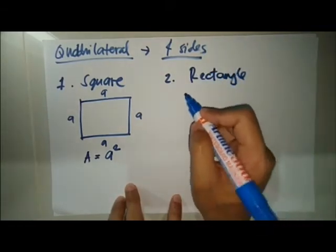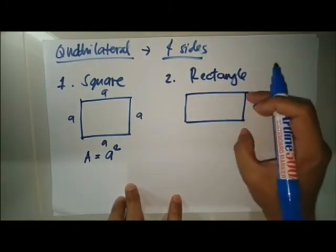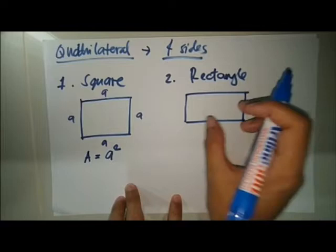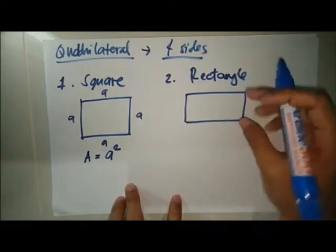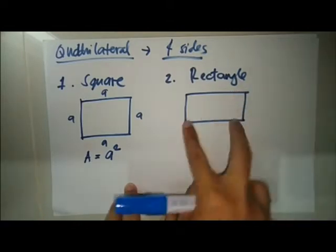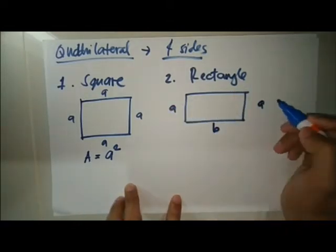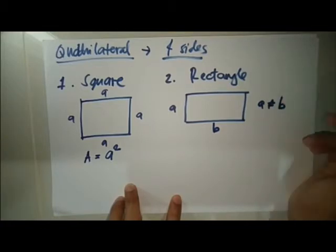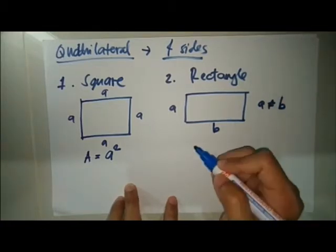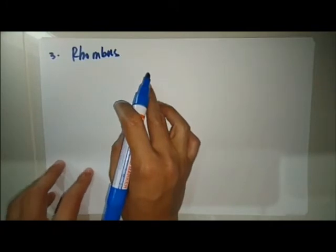Second, you have a rectangle. A rectangle has two pairs of parallel sides — all sides have parallel pairs — but the lengths are not equal, so a is not equal to b. Therefore, the area of a rectangle is a times b. We also have what we call the rhombus.